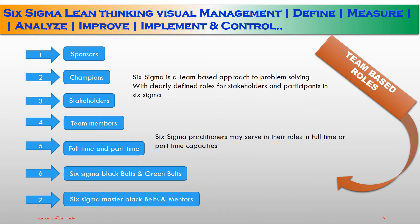Now we discuss team-based roles and responsibilities. Six Sigma is a team-based approach to problem solving with clearly defined roles for stakeholders and participants. The roles include: sponsor, champions, stakeholders, team members — both full-time and part-time — Six Sigma Black Belt and Green Belt, and Six Sigma Master Black Belt and mentors. Six Sigma practitioners may serve in full-time or part-time capacities. Seven roles have been defined for team-based participation.